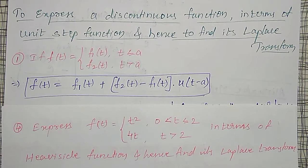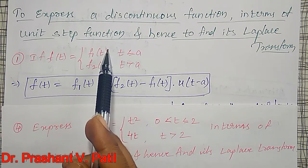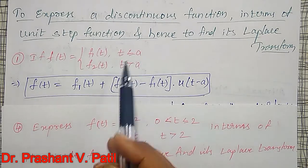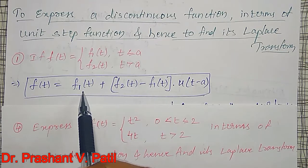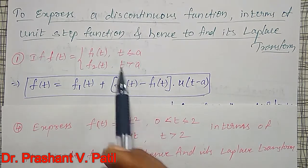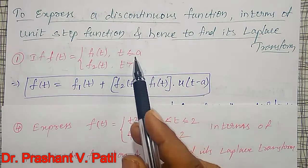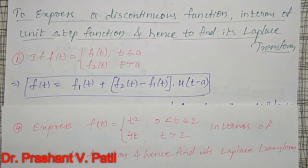Welcome friends. In this video, some more examples on discontinuous functions — to convert them and express them into a unit step function. If f(t) equals f1(t) for t ≤ a and f2(t) for t > a, then to express it into unit step function, we write f(t) = f1(t) + [f2(t) − f1(t)] · u(t − a), where a is the discontinuous point.